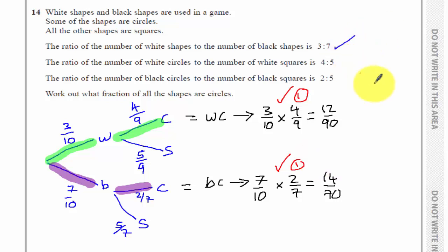So I've worked out the proportion of these shapes that are white circles are 12 over 90, 12 ninetieths. And the fraction of these shapes that are black circles are 14 seventieths. Work out what fraction of all the shapes are circles. I simply have to add these together. So 12 over 90 plus 14 over 70.